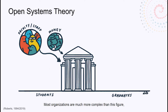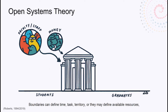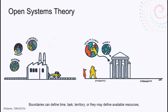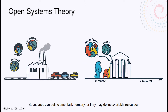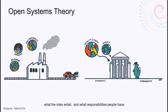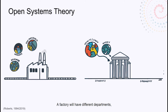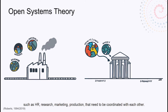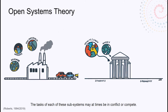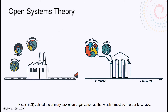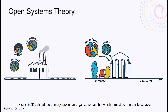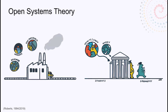Most organizations are much more complex than this figure, with many inputs, outputs, and different task systems. Boundaries can define time, task, territory, or they may define available resources, what roles entail, and what responsibilities people have. A factory will have different departments — such as HR, marketing, and production — that need to be coordinated with each other. The tasks of each of these subsystems may at times be in conflict or compete. Rice defined the primary task of an organization as that which it must do in order to survive.